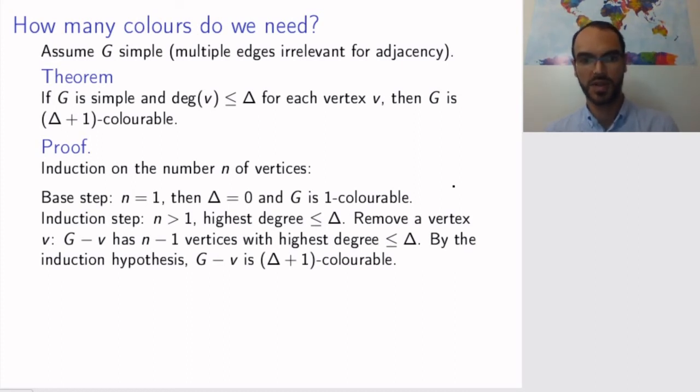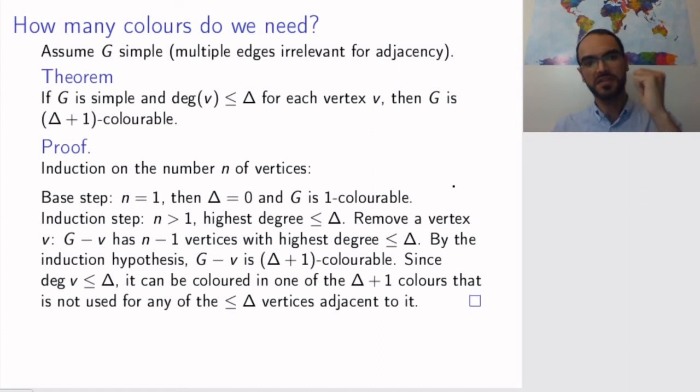What's the situation now? We have been able to color, by the induction hypothesis, all the vertices of our graph with this vertex removed in delta plus one colors. Now we need to show that when we put this vertex back, we don't need extra colors. Well, this vertex, remember, had degree no greater than delta. So it will be adjacent to delta vertices at most, and we have delta plus one colors available. So there will always be at least one color that's not used up by the vertices around this vertex v, and we can use that color for v. And this proves that our graph is (delta + 1)-colorable.